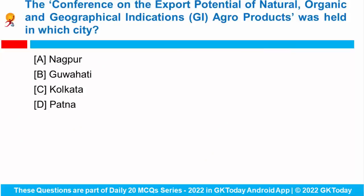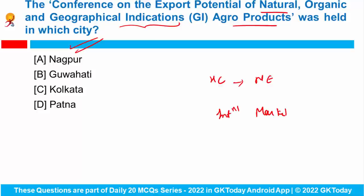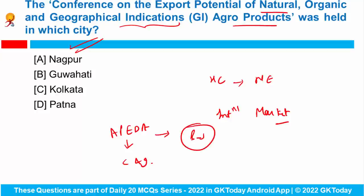The Conference on the Export Potential of Natural, Organic and Geographical Indications Agro-Products was held in which city? To boost the export of horticulture products grown in the North Eastern States, the government has formulated a strategy to promote locally produced agricultural products to the international market. APEDA, which works under the Ministry of Commerce and Industry, organized this conference on the export potential of natural, organic and GI agro-products in Guwahati, Assam.